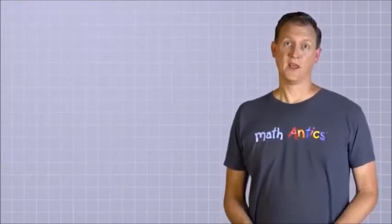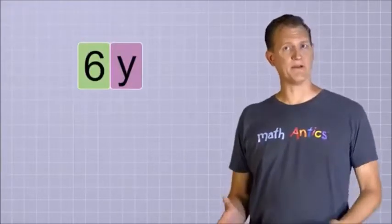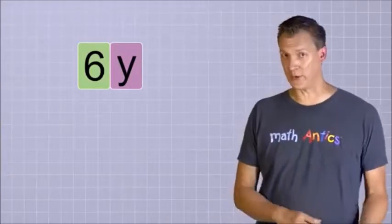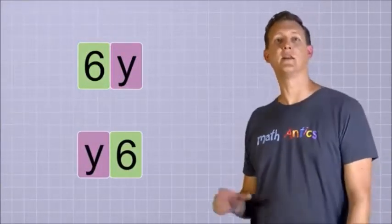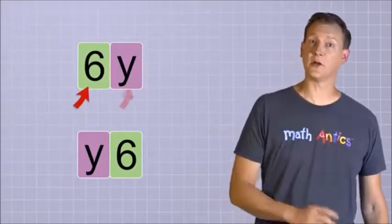Oh, and there's one thing I should point out before we move on. If you have a term like 6y, even though it would be fine to do the multiplication the other way around and write y6, it's conventional to always write the number part of the term first and the variable part of the term second. Ok, so that's the basic idea of a term, but there's a little more to terms that we'll learn in a minute.